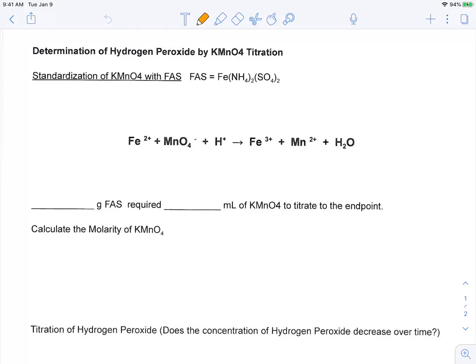Hey everybody, it's Mr. Mott. What I want to do is go through our calculations that are involved in the determination of the percent hydrogen peroxide in the lab using potassium permanganate as the titrant in our titration.